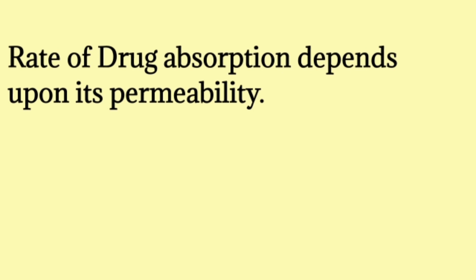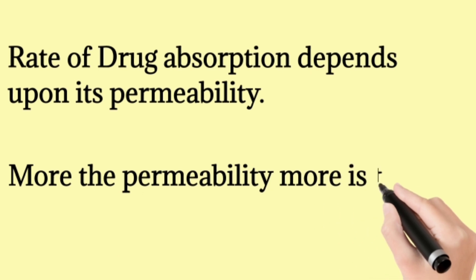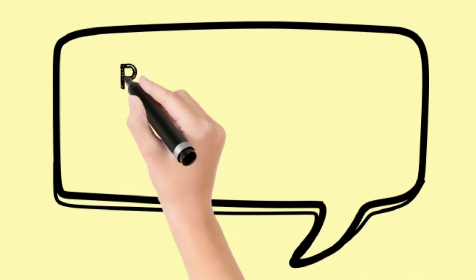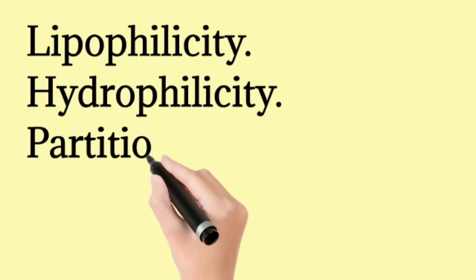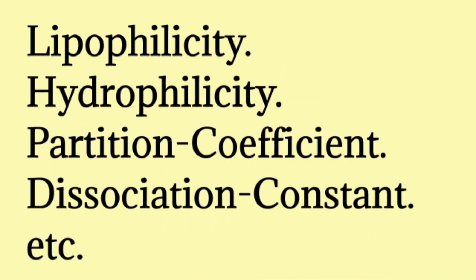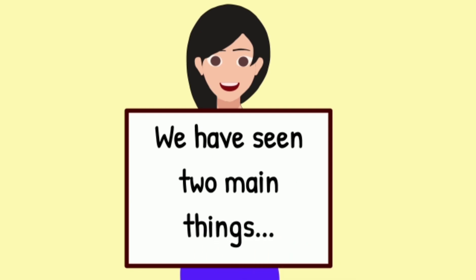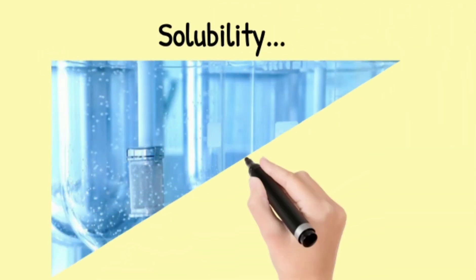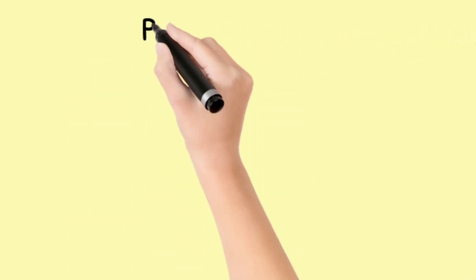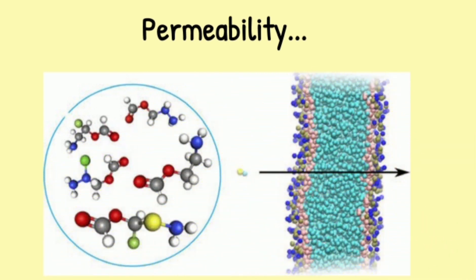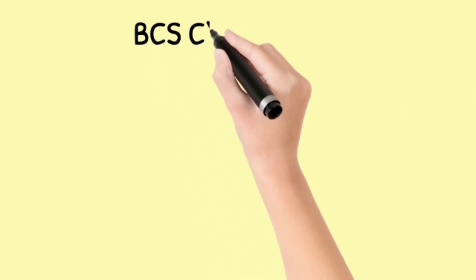The more permeable a drug is, the greater its absorption, meaning more drug enters blood circulation and the higher its bioavailability. Permeability of a drug depends on various factors like its hydrophilicity, lipophilicity, partition coefficient, and dissociation constant. So in this whole process we observed two things — solubility, where the drug mixes with intestinal fluid to form a solution, and permeability. These two factors are the basis of BCS classification.